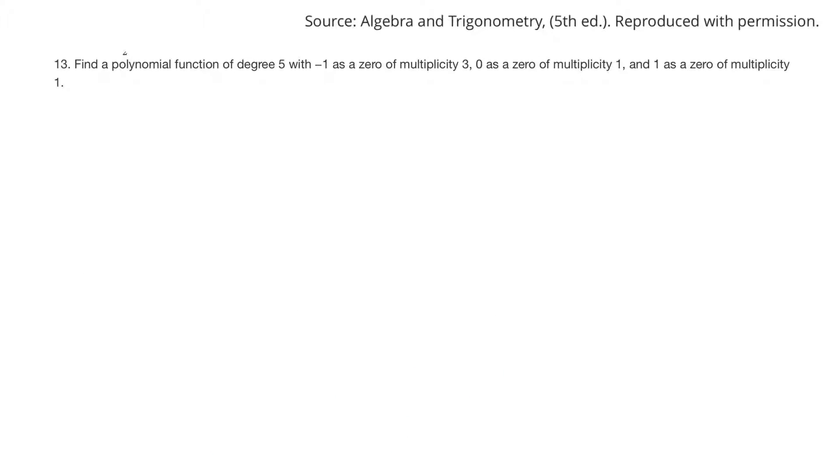Here's another question. Find a polynomial of degree 5 this time with minus 1 as a zero with multiplicity of 3, so there's 3 of them. Zero with multiplicity of 1, so that'd be x plus 0 or just x. And then 1 as a zero, multiplicity of 1, so it'd just be x minus 1.